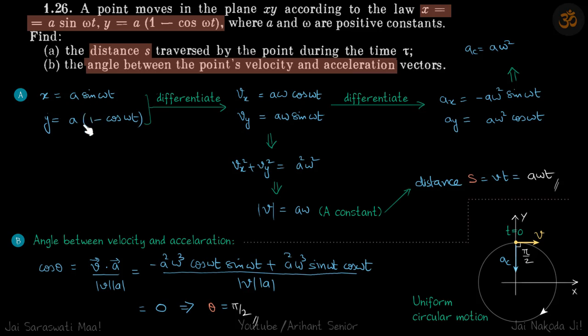We write the two given equations. If we differentiate them, Vx equals a omega cos omega t and Vy is a omega sin omega t. If you find the total velocity, it comes to be a omega, which is a constant.